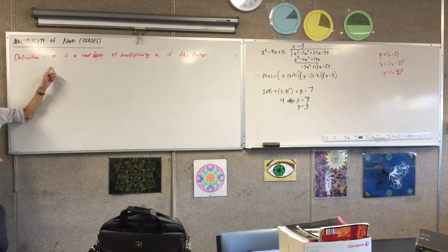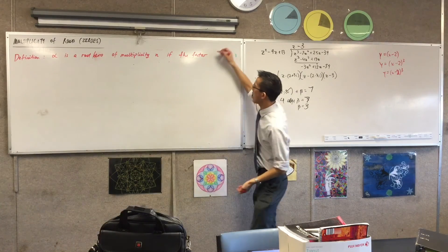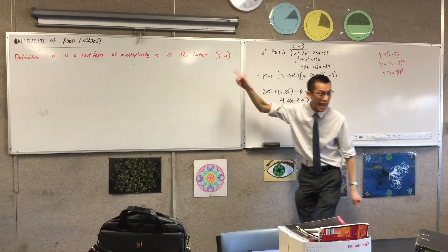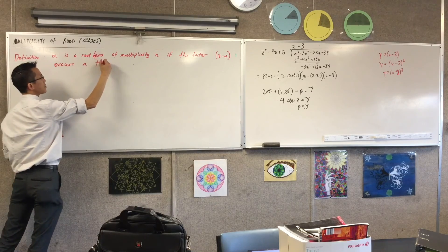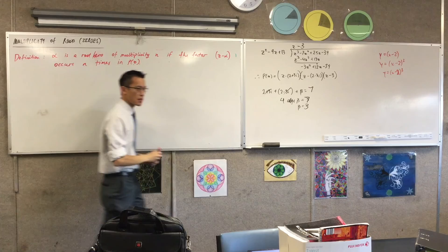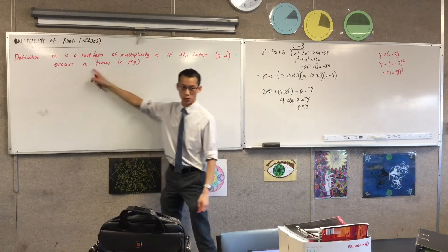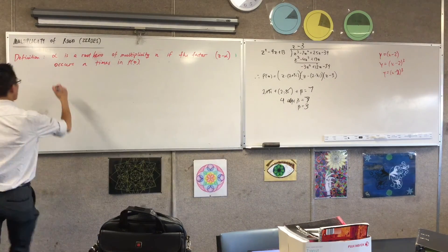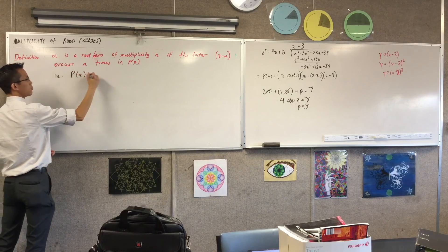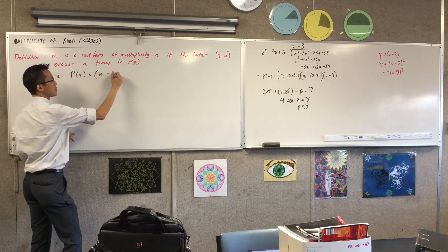What factor goes along with the root at x equals alpha? It's going to be the actual factor — something like z minus alpha. If that factor occurs n times, then we're borrowing the language of prime factorization: you've got a factor that comes up multiple times. It's still a factor, but it behaves differently. In other words, you've got some polynomial and you can write it as that factor n times, i.e., (z minus alpha) to the power of n.